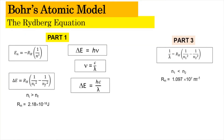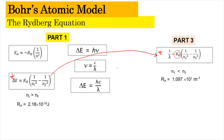The Rydberg equation. In the previous video, you looked at different equations and formulas covered in Part 1. In this video, you've been introduced to a new formula: 1 over lambda equals RH times (1 over N1 squared minus 1 over N2 squared). This formula is almost similar to the previous one — so what is the relationship between these two formulas?